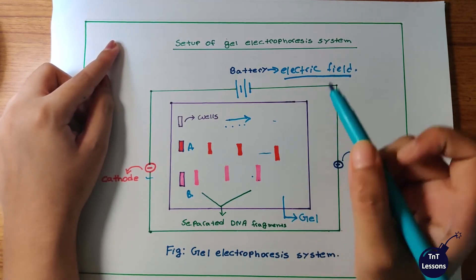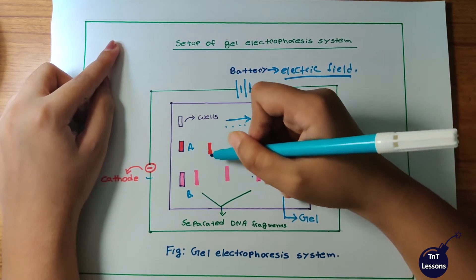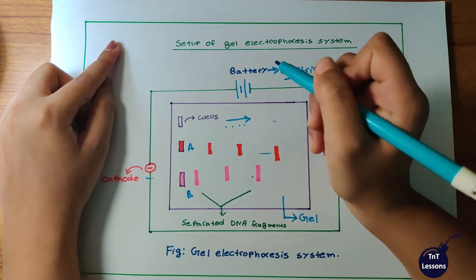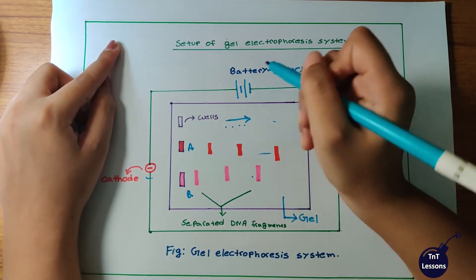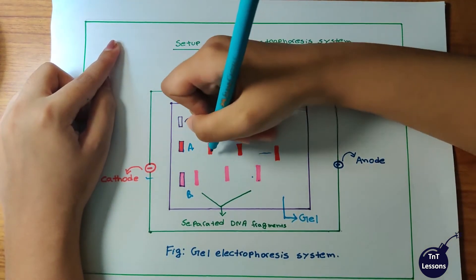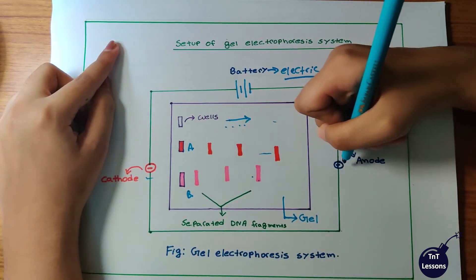Why do they move? Because the DNA fragments are negatively charged due to the presence of phosphate groups. We know that negative charge always attracts positive charge, so the DNA fragments move toward the anode.